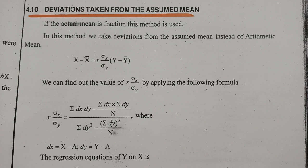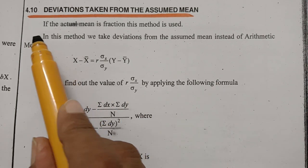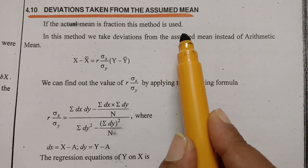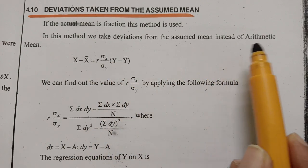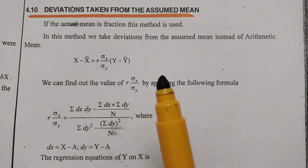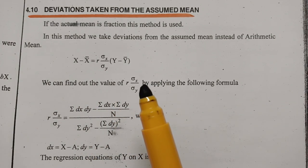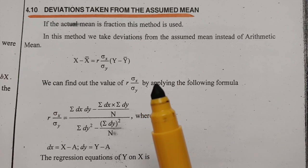We are going to take the deviations from the assumed mean. In my earlier video we took deviations from the actual mean. If the actual mean is a fraction — that is, not a whole number — this assumed mean method is used. So in this method we take the deviation from the assumed mean instead of the arithmetic mean.